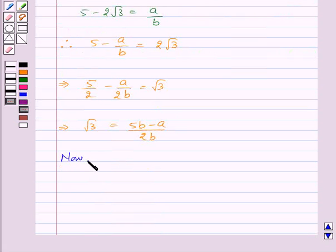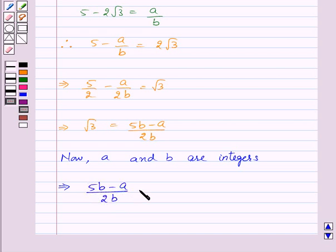Now a and b are integers. So this implies that 5b minus a upon 2b is rational. So this implies root 3 is also rational, because 5b minus a upon 2b which is rational is equal to root 3. So that means root 3 is also rational.